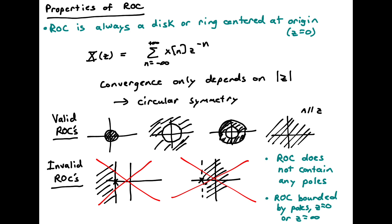Other properties of the ROC: the ROC does not contain any poles. A pole, by definition, is where the function blows up and therefore does not converge. But the ROC will be bounded by poles, or bounded by Z equals zero or Z equals infinity. We especially want to keep in mind that we always have this circular symmetry in the complex plane.